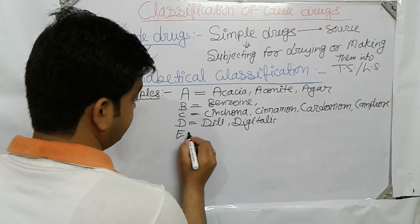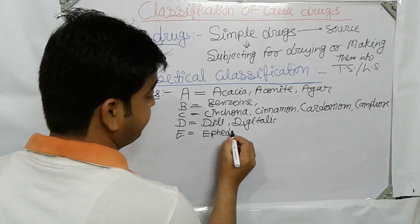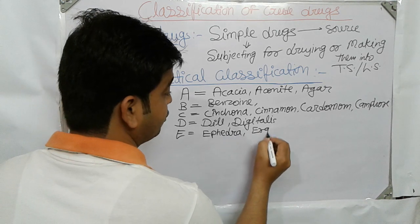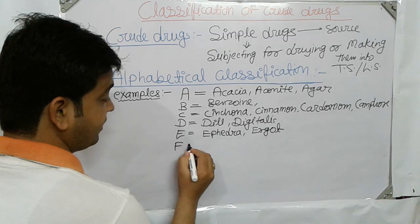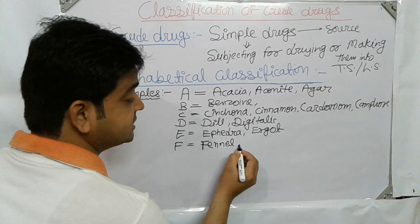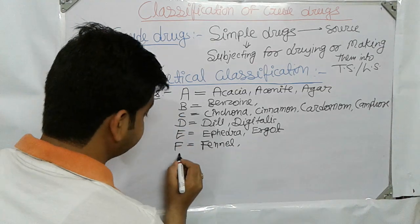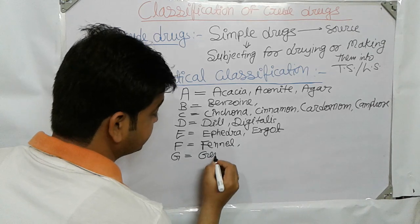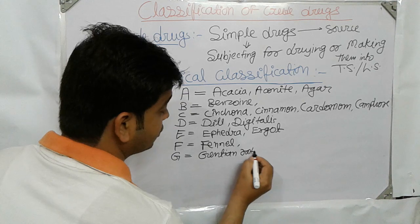E for Ergot Alkaloid. F for Fennel, which is a fruit. G for Ginseng Root. H for Henna.